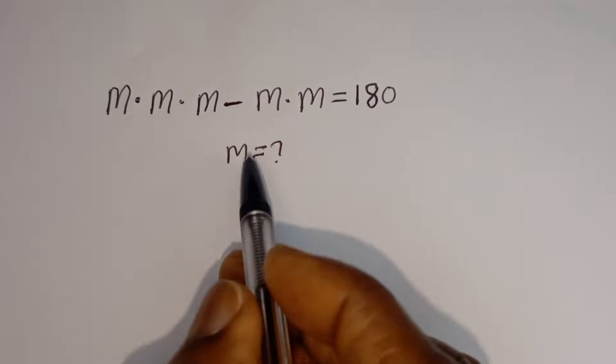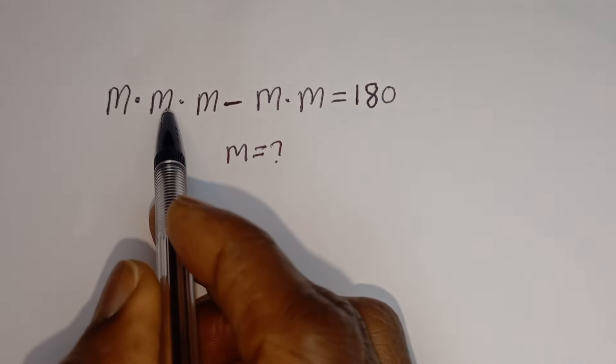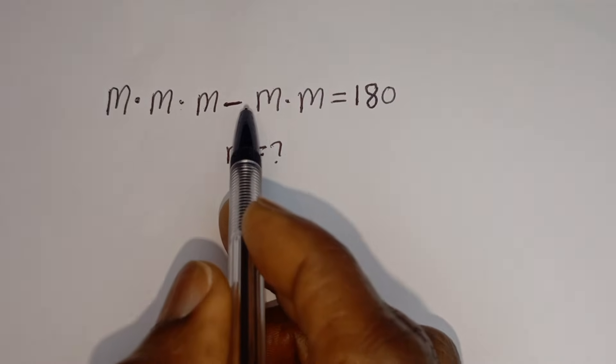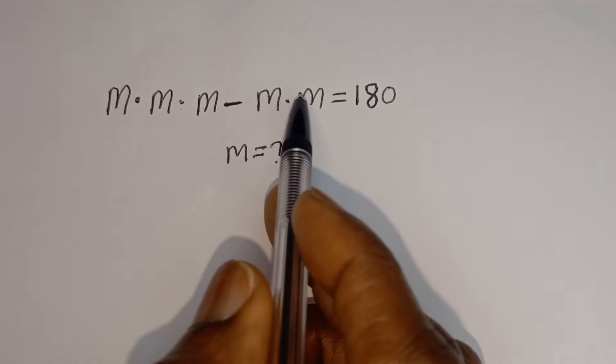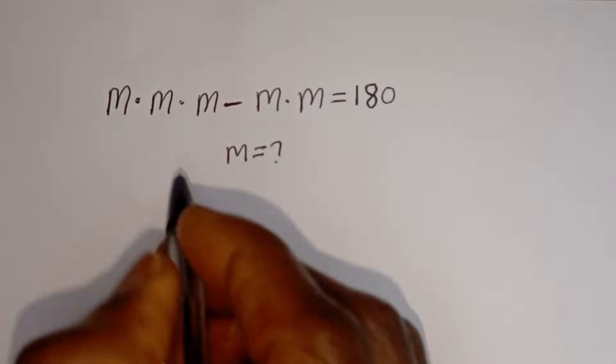Hello, how to solve for M in this equation: M multiplied by M multiplied by M, minus M multiplied by M, is equal to 180.